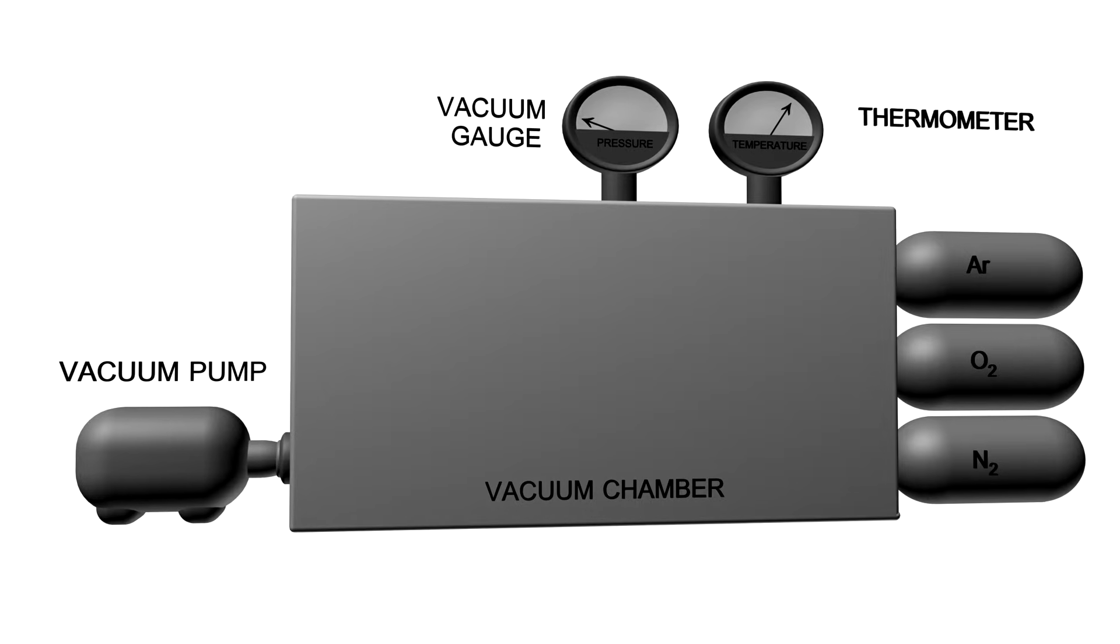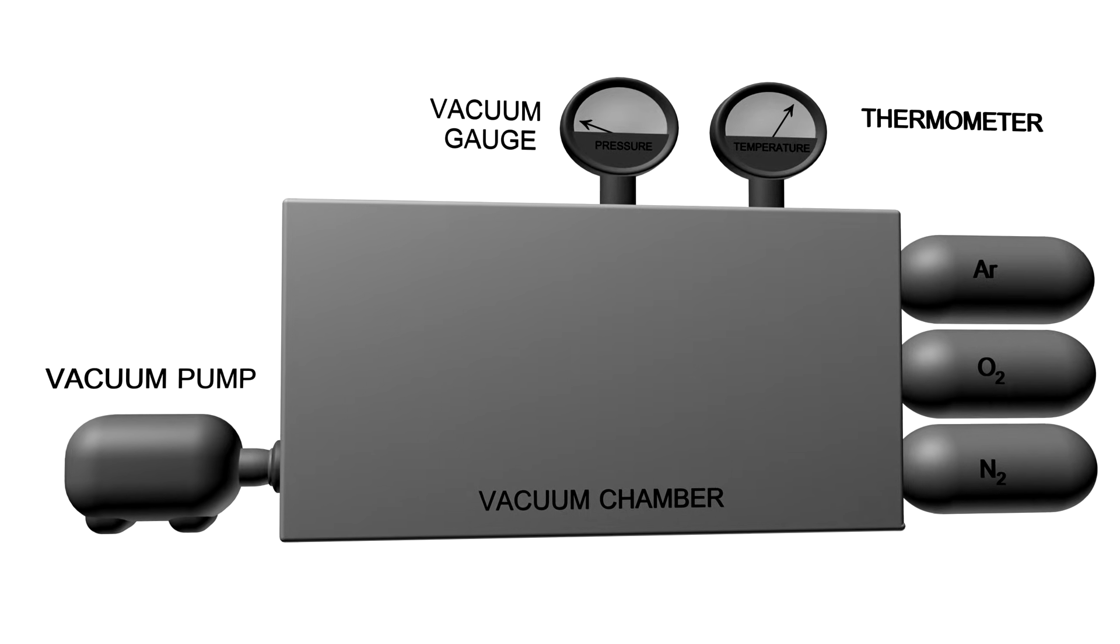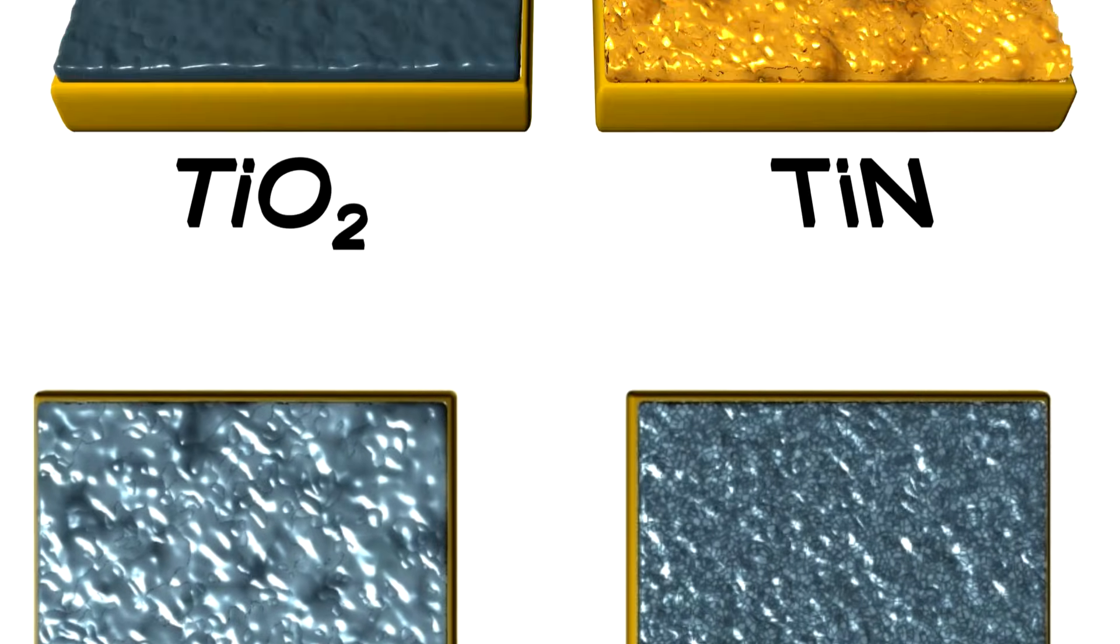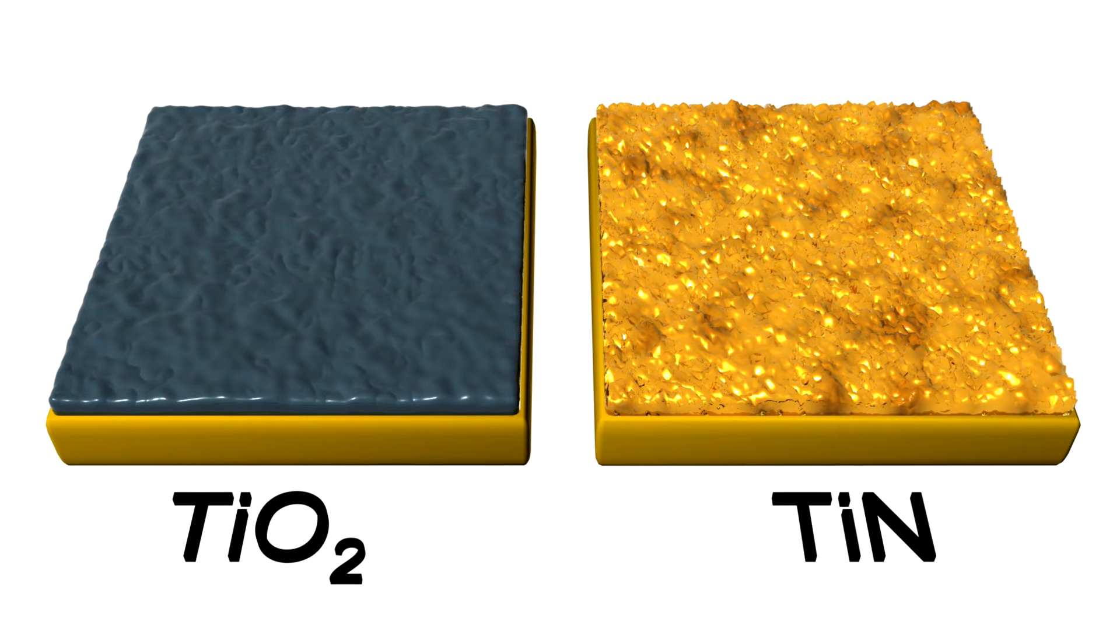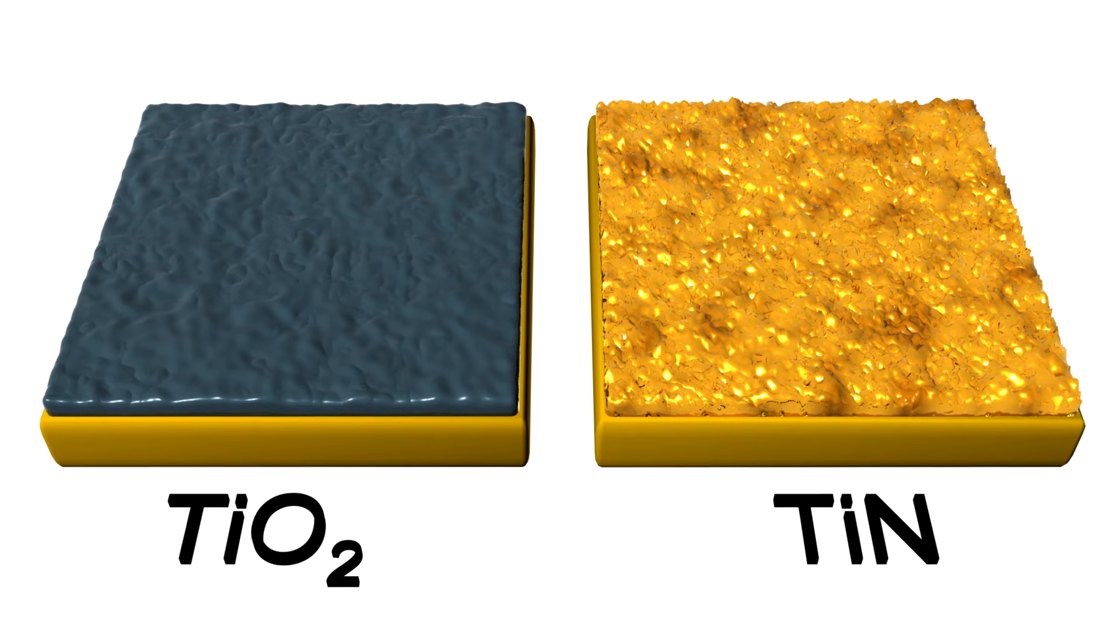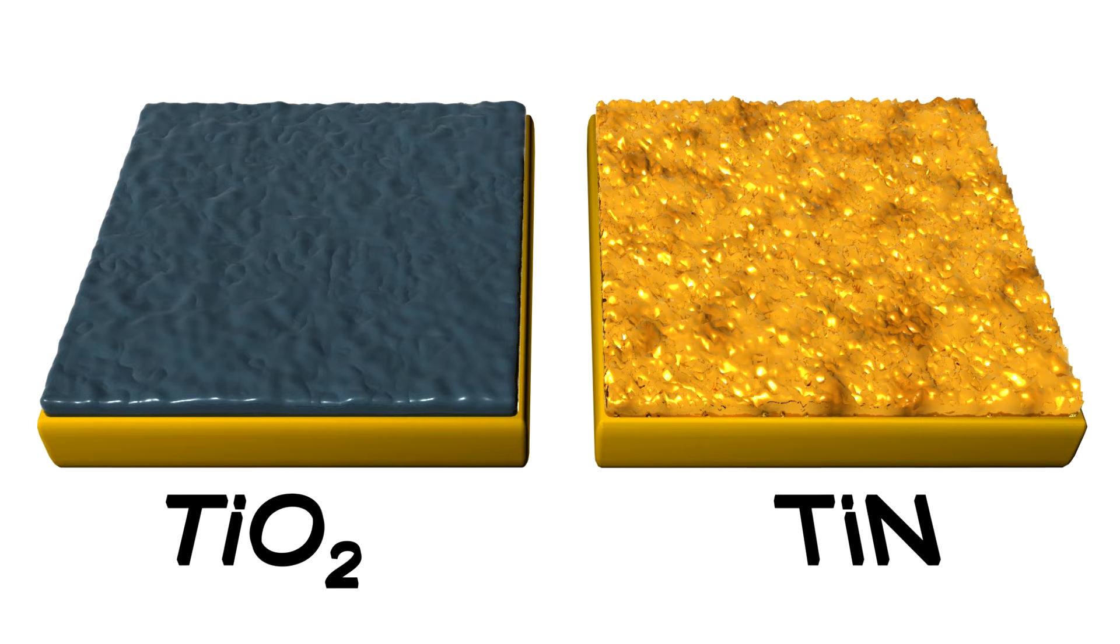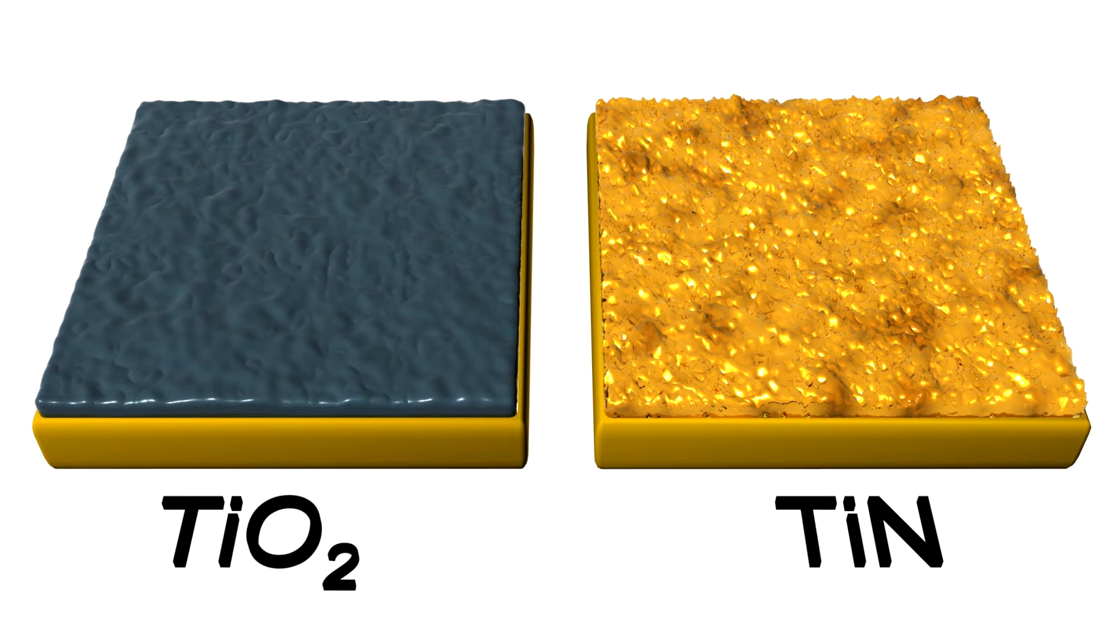The pulsed laser deposition process can be carried out in various gas environments at different pressures. This is important because the pressure of the gas has a significant effect on the film growth rate, crystallinity and stoichiometry. For instance, the deposition of metal oxides is normally carried out in the presence of oxygen to ensure that enough oxygen is bound to the metal. The deposition of nitrides, on the other hand, should be carried out in the presence of nitrogen.